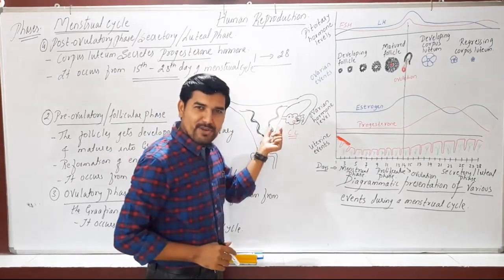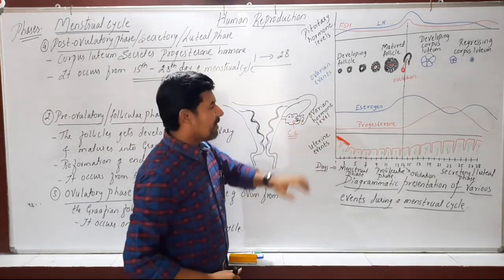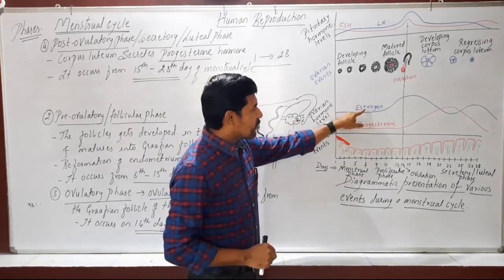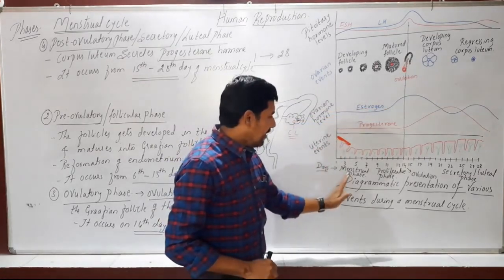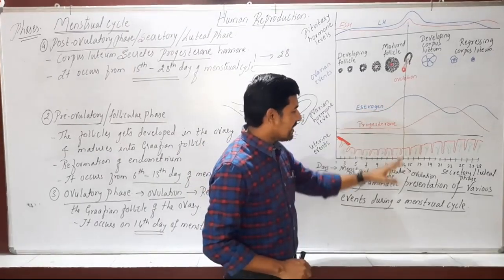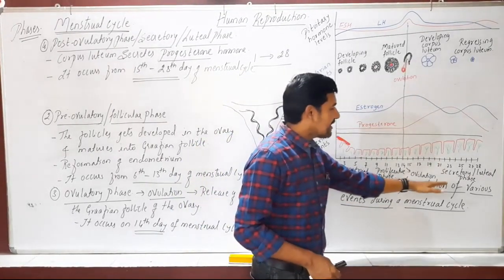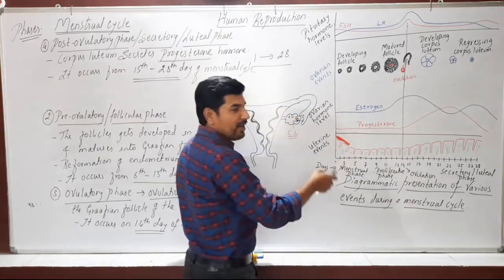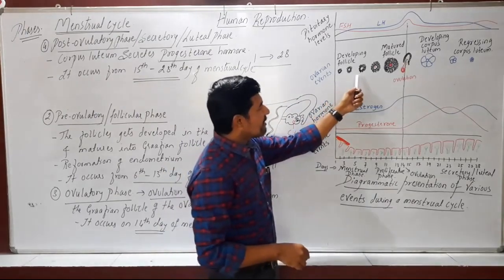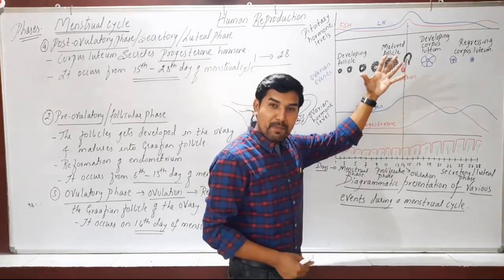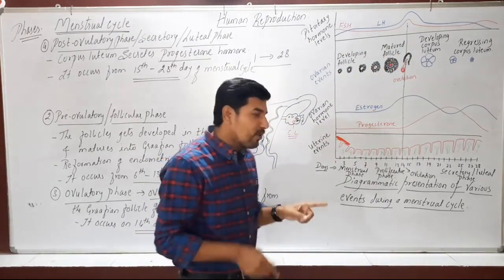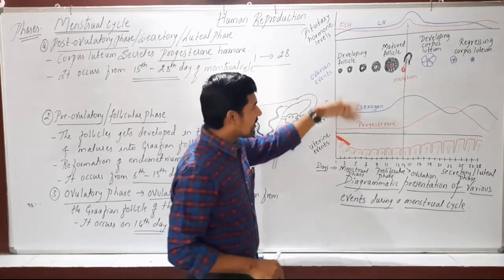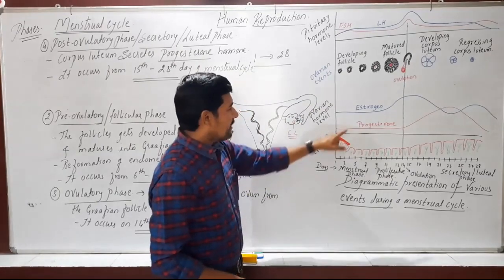Looking at ovary hormone levels: the ovary secretes two hormones — estrogen and progesterone. The estrogen level is normal in the menstrual phase. In the proliferative phase, estrogen level goes on increasing. It continues to increase during ovulation and early secretory phase, then decreases toward the end of the secretory phase. This is because follicles — primary, secondary, tertiary — grow and release estrogen, which is the female sex hormone.